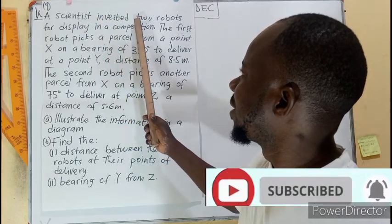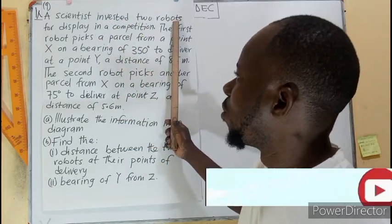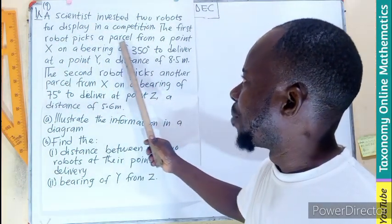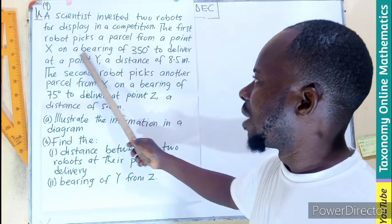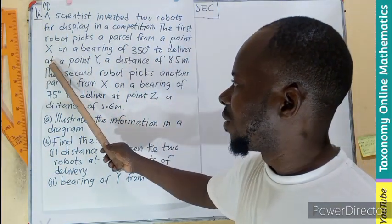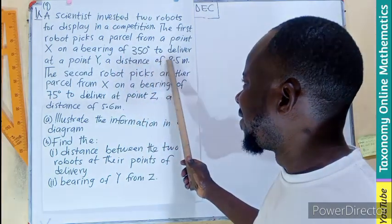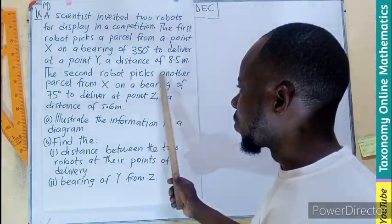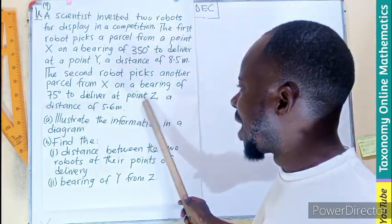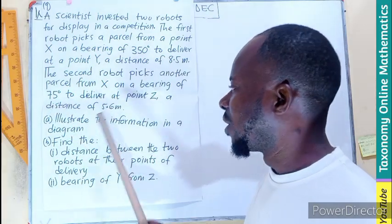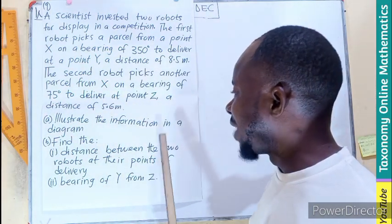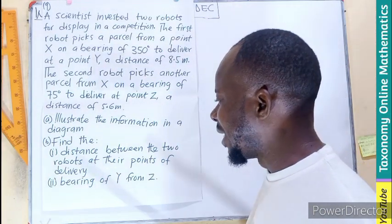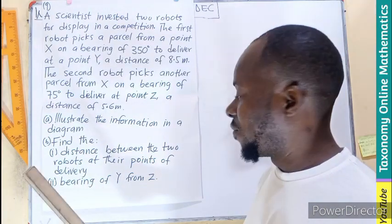A scientist invented two robots for display in a competition. The first robot picks a parcel from point X on a bearing of 350 degrees to deliver at point Y, which is at a distance of 8.5 meters. The second robot also picks another parcel from the same point X on a bearing of 75 degrees to deliver at point Z, which is at a distance of 5.6 meters. We have to illustrate on a diagram, find the distance between the two robots' delivery points, and the bearing of Y from Z.